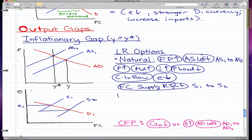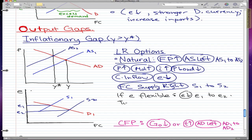Now I'm going to add a twist: let's say we want to keep the exchange rate E at the same level. So this is E1 and this is E2. The twist is that I'm going to try to keep the exchange rate at E1 by doing some manipulations concerning the bank. If E is flexible, then E fell from E1 to E2.